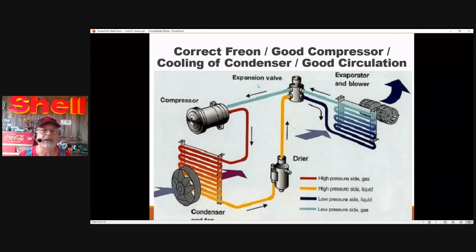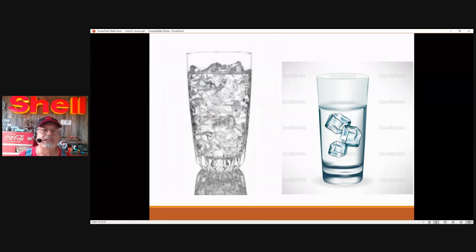We have to have the correct amount of Freon. We have to have good compressor. We have to have good cooling or removing the heat of the condenser and we have to have good circulation. All these are the ingredients. Do you want a full glass of ice water or do you want half a glass of ice water? Four things have to happen in order for this ice water to be full and it's not just the responsibility of the refrigerant. This is the compressor, the condenser and the circulation.